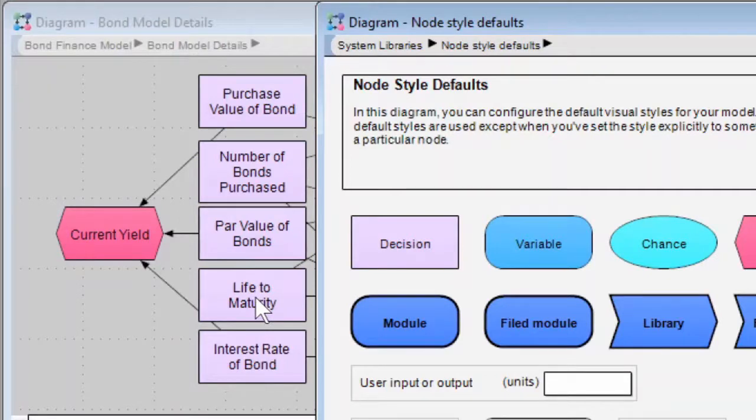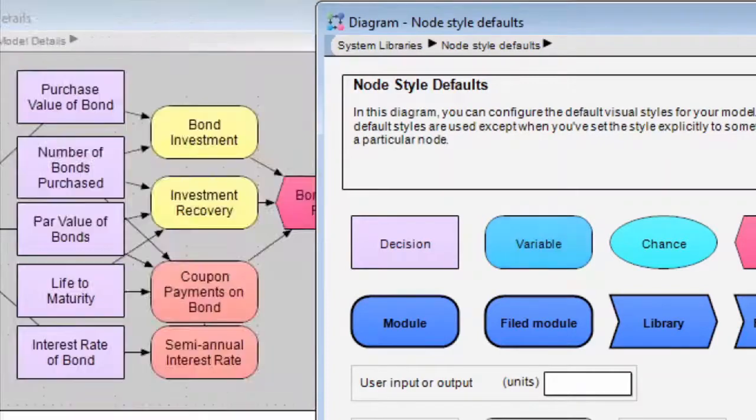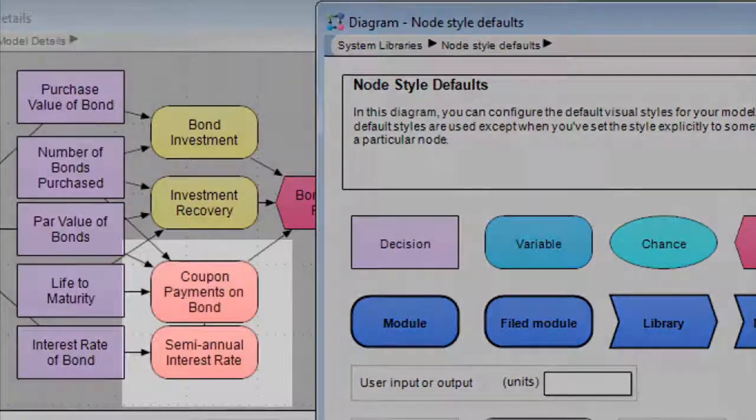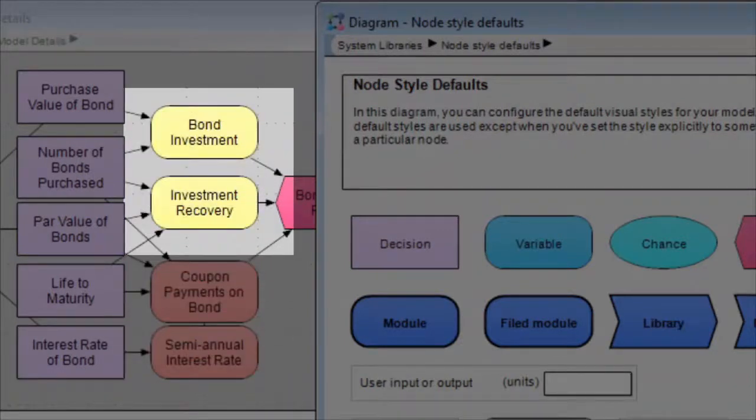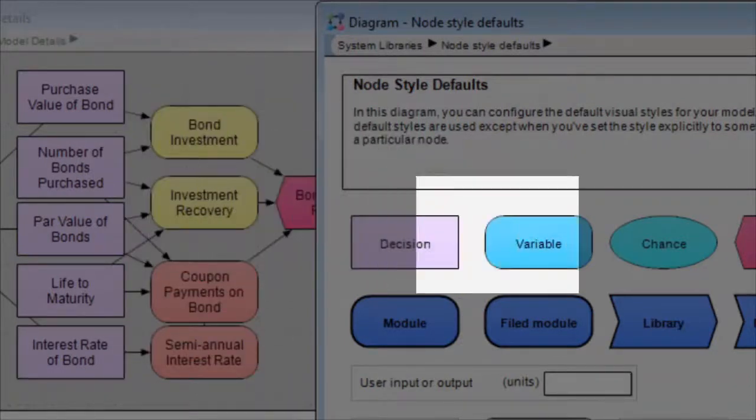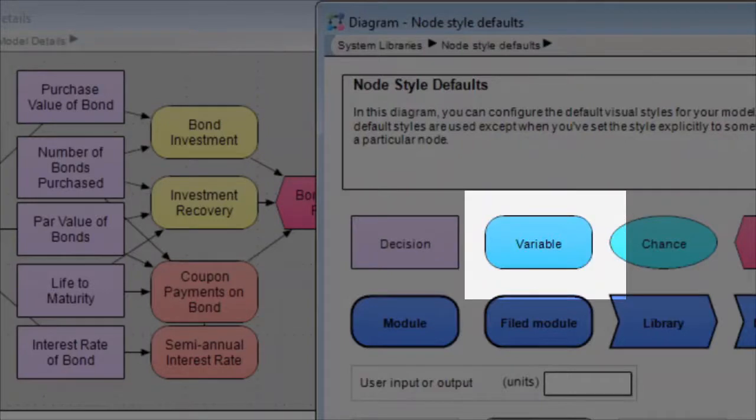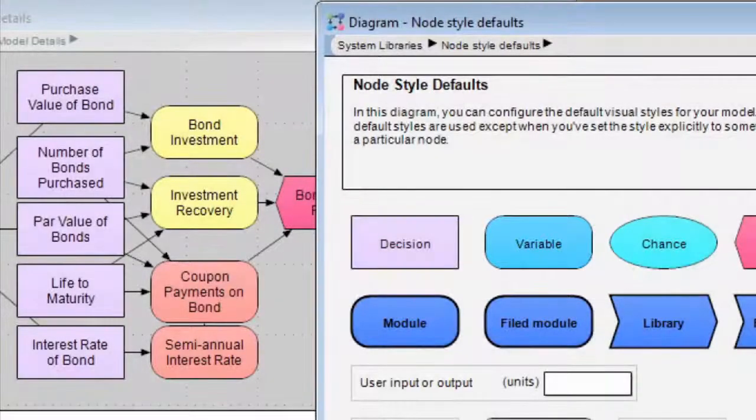But wait, let's rewind. Suppose you set explicit node colors and wanted to keep it that way for some nodes while wanting to change it for other nodes. Let's find out how we can accomplish this. In this variant of the model, I've set two of the variable nodes as a light red. Other variable nodes in the model are light yellow and my default is still the standard blue. If I decided that light red wasn't a good choice,